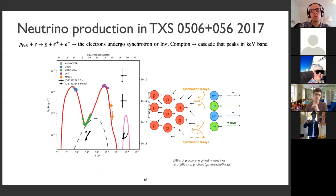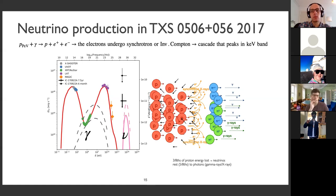These pairs, once produced in the source, undergo synchrotron cooling or inverse Compton interactions, and they produce more and more photons, peaking more or less in the X-ray region. So we can increase the proton luminosity until we overshoot the data — we can't do that. That gives us an upper limit to the proton luminosity in the source.